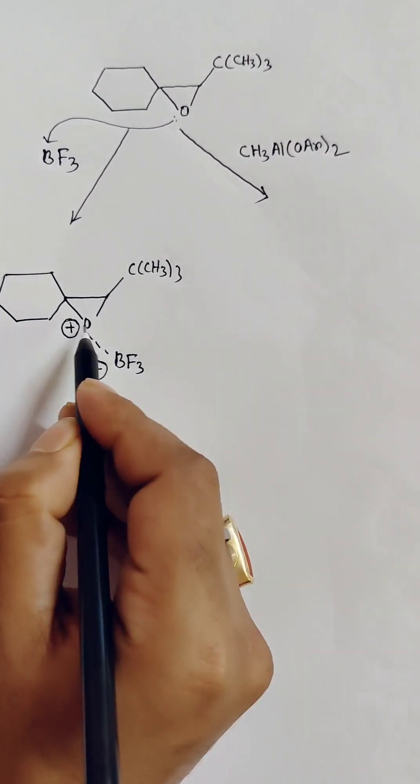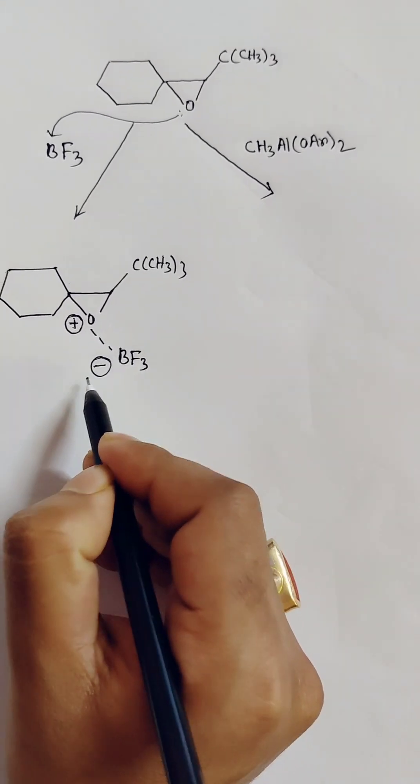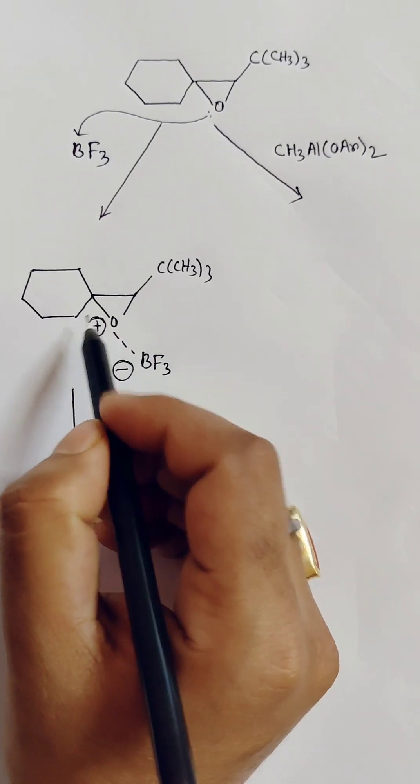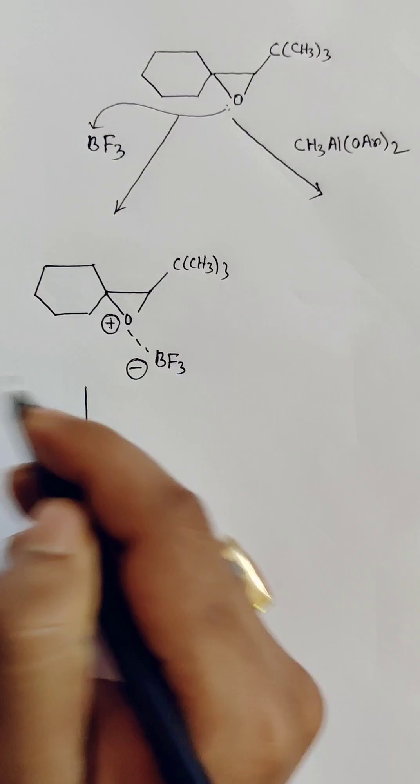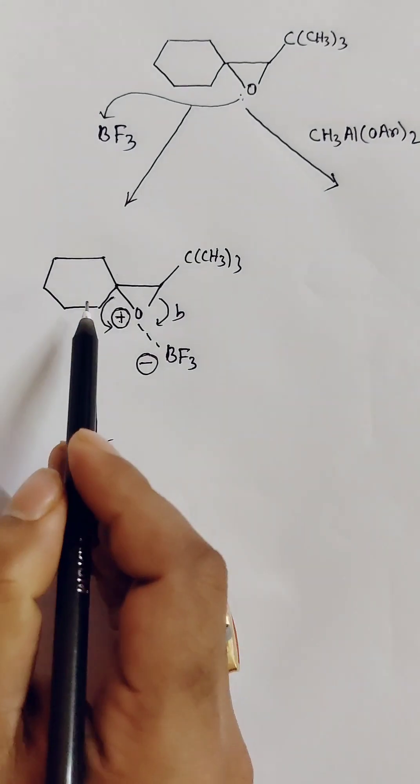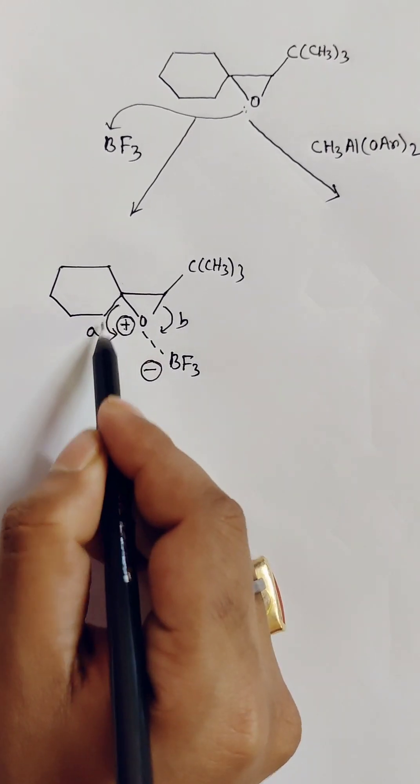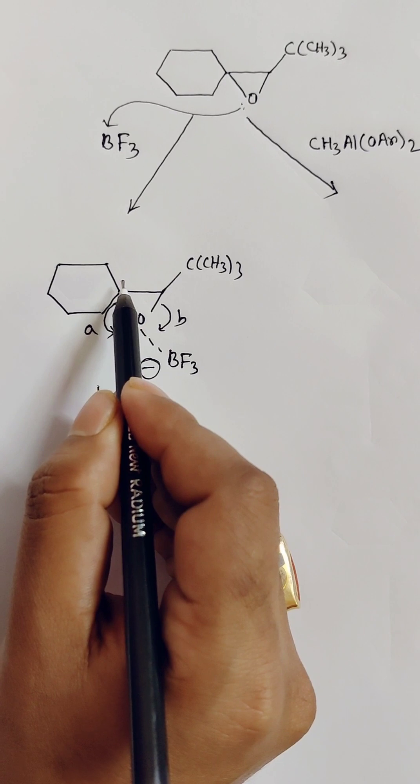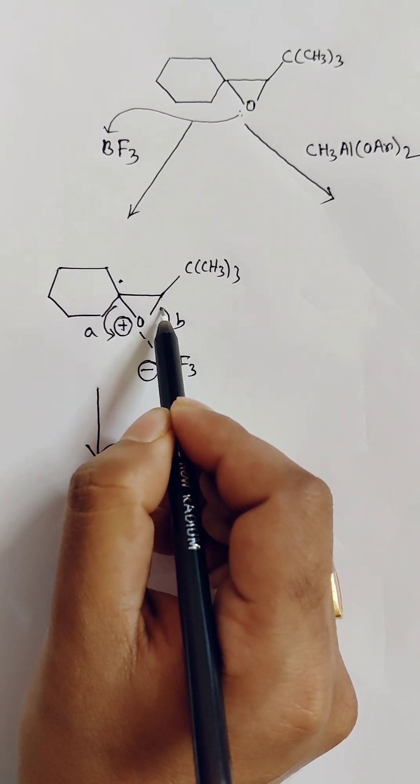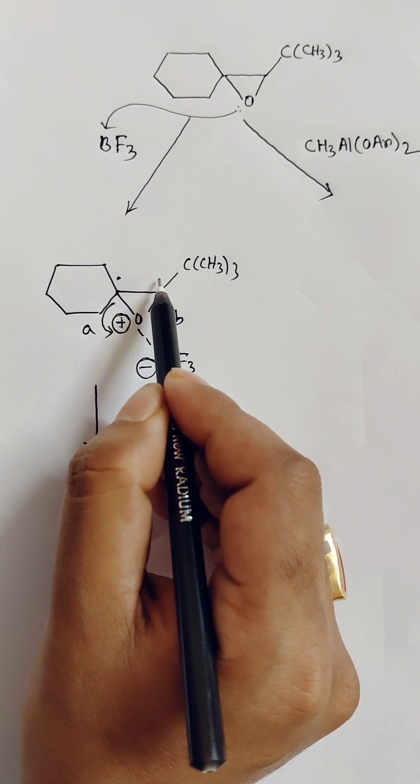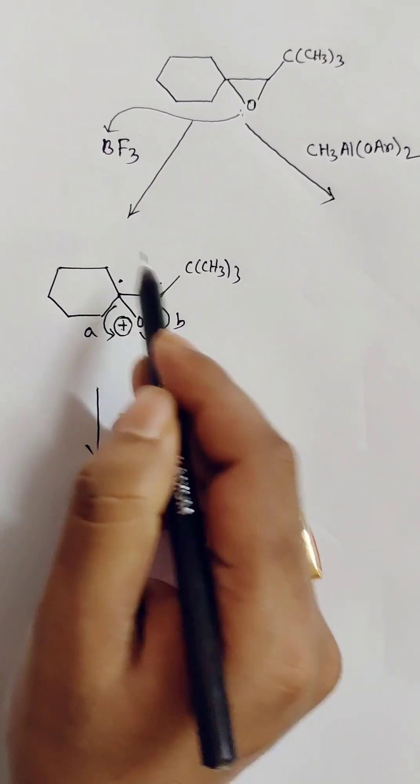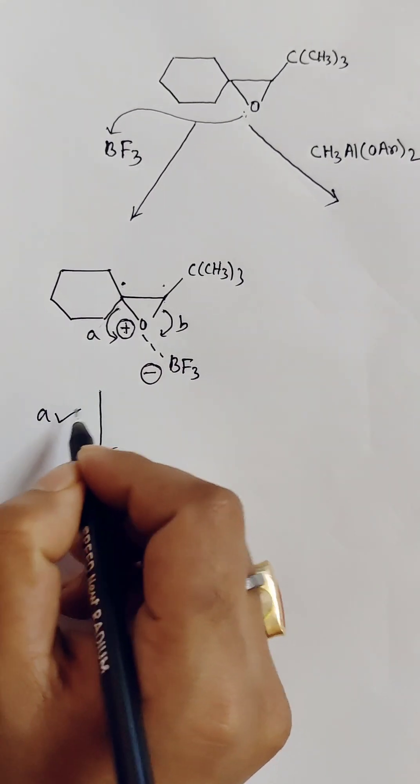...this, where oxygen has a positive charge and bromine has a negative charge. Now the most important question is: from which side will the ring opening occur? This side, path A, or this side, path B? If ring opening occurs in the A path, then positive charge will be present in this place. If ring opening occurs via the B path, then positive charge will be present on this carbon. As we know, this carbon is the more substituted side, so it will go via the A path.